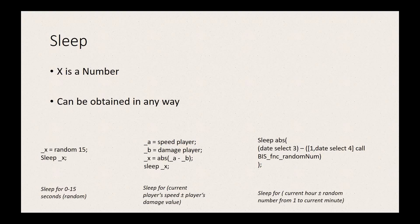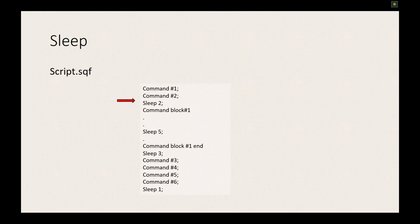As with most commands you can replace the hard-coded number with a variable, another command returning a number, or even a function call to calculate a more random or dynamic time period. Just make sure that you are still working with a number in the end and you will have no problems. Of course, if things were this simple and there wasn't anything else to the command, I would probably not even bother making a separate video for it — and you might have already guessed there's something more interesting to talk about.